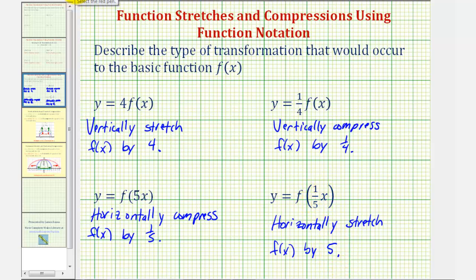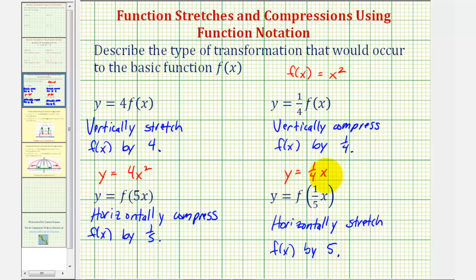So for example, if we consider the basic function f of x equals x squared, four times f of x would be y equals four x squared. Y equals one-fourth times f of x would be y equals one-fourth x squared. And for f of five x, the input is now five x, so we would have y equals five x quantity squared, or twenty-five x squared. And for y equals f of one-fifth x, we would have y equals one-fifth x quantity squared, which would be the same as one twenty-fifth x squared.